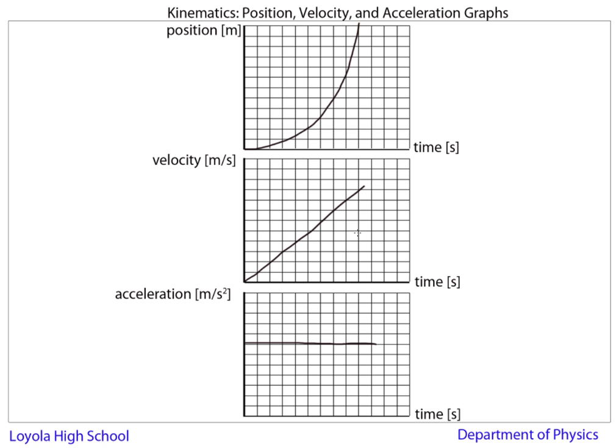What we've seen in previous equations is that average velocity is equal to the change in position over the change in time. So what does that mean in terms of graphs?